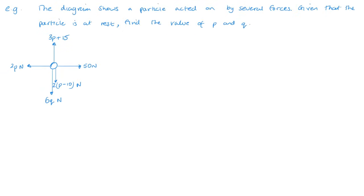Second example. The diagram shows the particle acted on by several forces. Given that the particle is at rest, find the value of p and q. So if this particle is at rest it means that the forces are balanced. So the force to the left, the force to the right are equal. So I can start off with 2p equals 50, and therefore p equals 25 newtons.